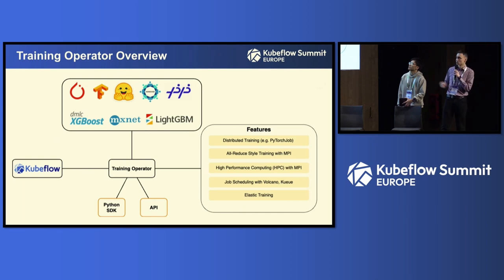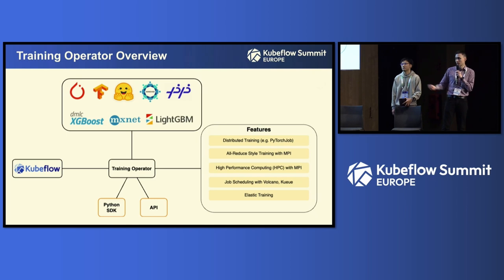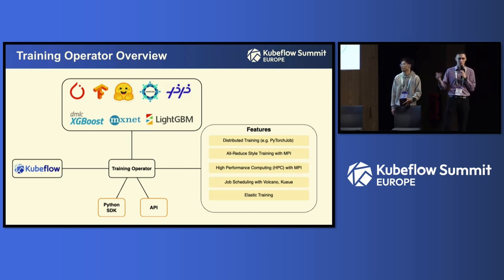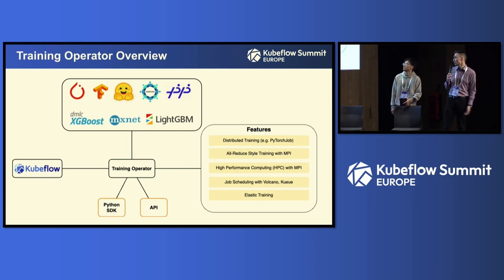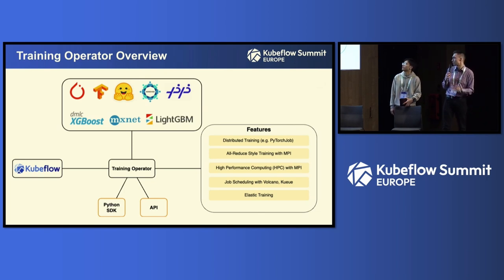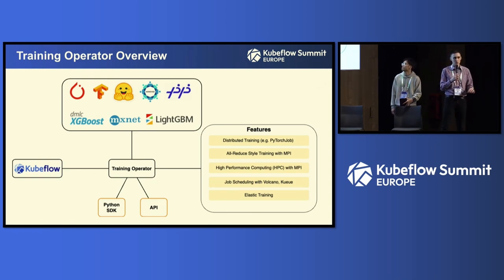The Training Operator, similar to Katib, is a framework which connects deep learning and ML libraries with Kubernetes infrastructure via Kubernetes APIs and Python APIs. It has features for distributed training — running multiple workers or multiple GPUs at really large scale. Users are training LLMs from scratch. We also support all-reduce type training, MPI operator capabilities for HPC tasks, job scheduling, and elastic training, being native to PyTorch libraries.